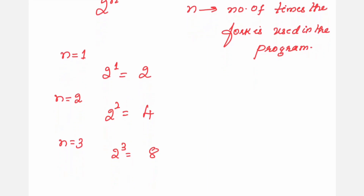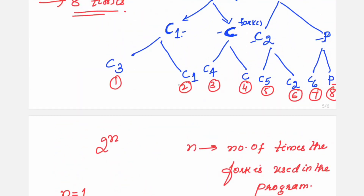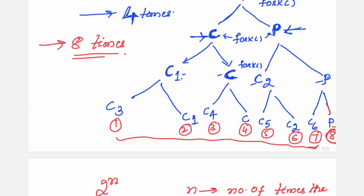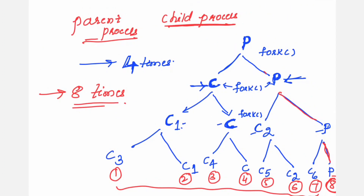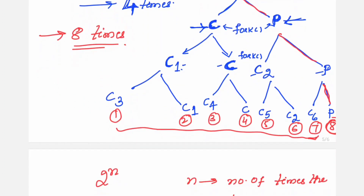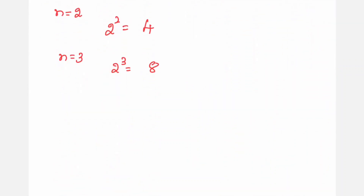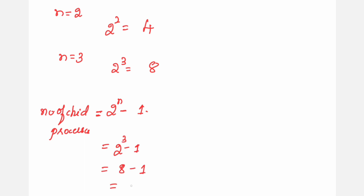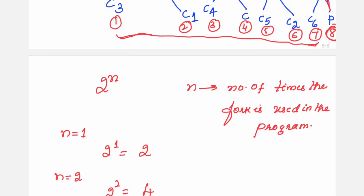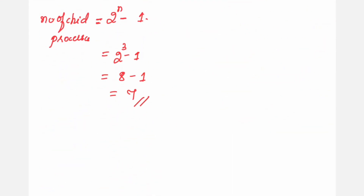To find how many child processes are created, we count: with 3 forks, there are 8 total processes but 7 child processes, since only one is the original parent. The formula for the number of child processes is 2 to the power of n minus 1. For n=3, that gives 8 minus 1 equals 7 child processes. You can verify: C1, C, C2, P, C3, C4, C5, C6 — 7 child processes total.